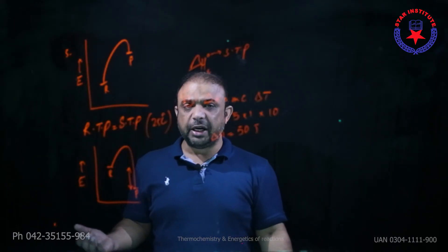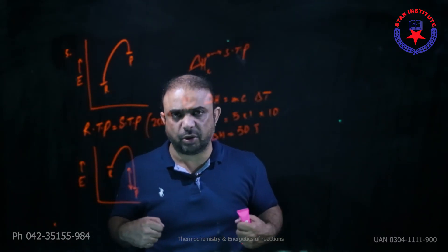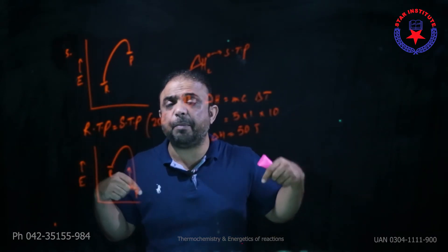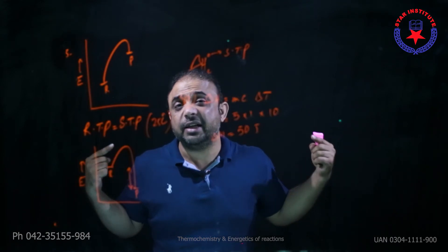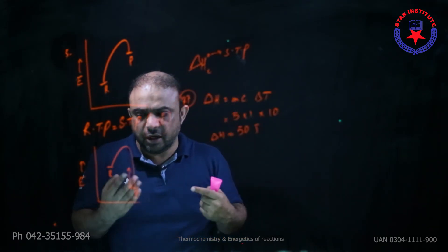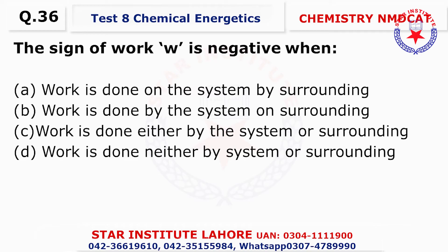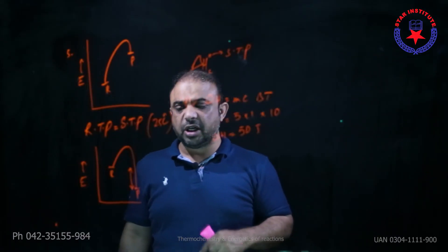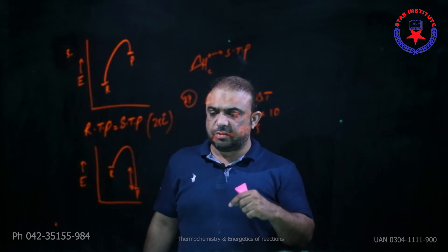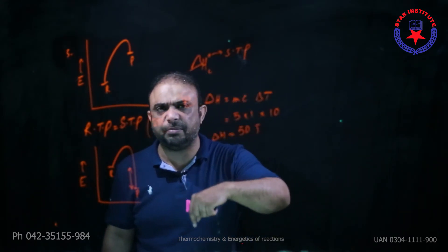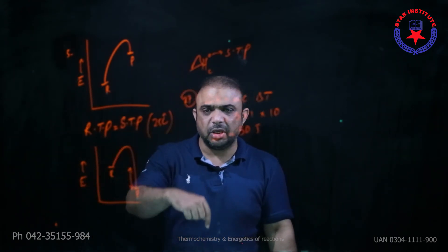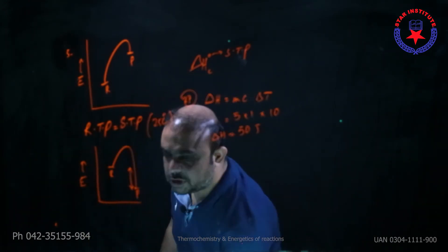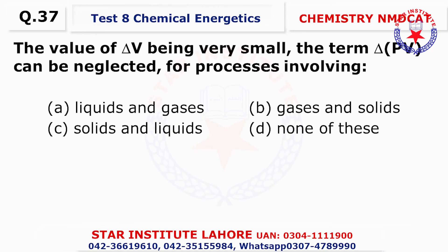Question number thirty-five: The sign of heat q is positive when the reaction is endothermic — heat flows from the surroundings into the system. So the choice is C. Question number thirty-six: The sign of work w is negative — in chemistry, when work is done by the system, it is negative; when work is done on the system, it is positive.